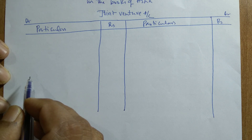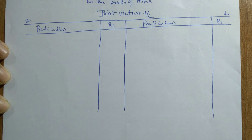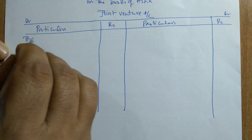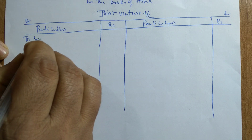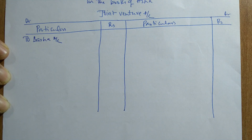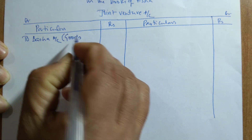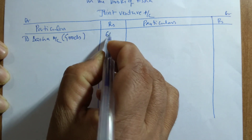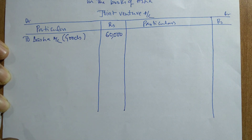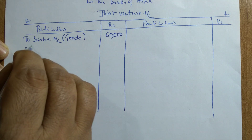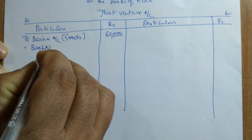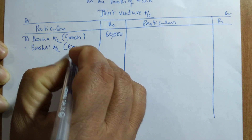Basha bought goods costing rupees 60,000. Since the books are maintained by Asha, anything spent by the co-venturer must be debited to the joint venture account and credited to Basha's account. Basha has incurred rupees 60,000 for goods — that will be taken. At the same time, he has incurred rupees 2,000 for expenses — that will also be taken to Basha's account.